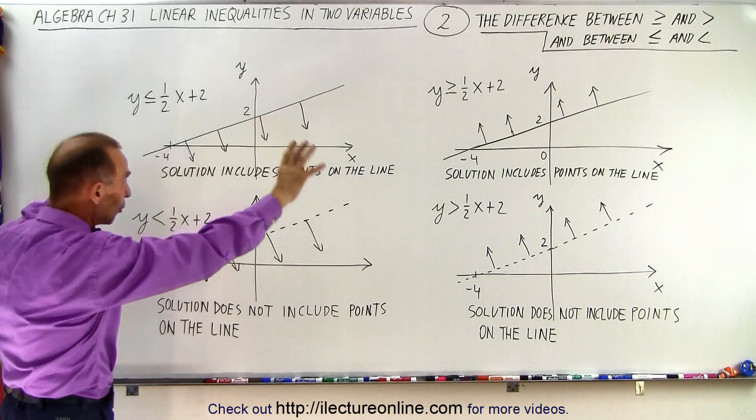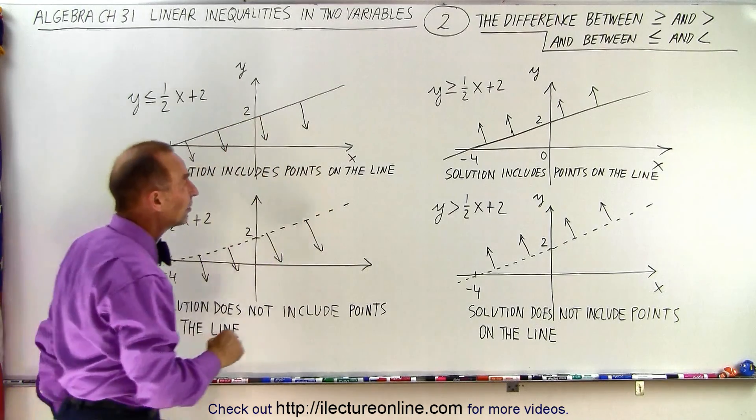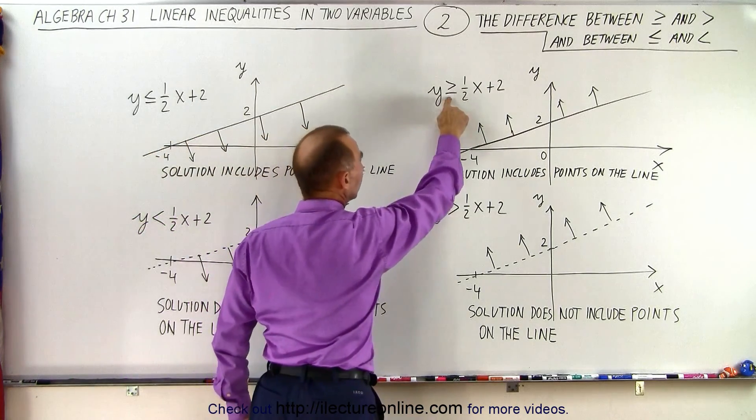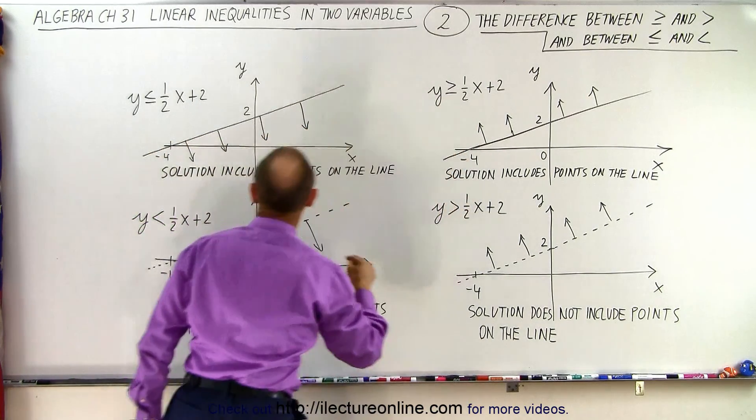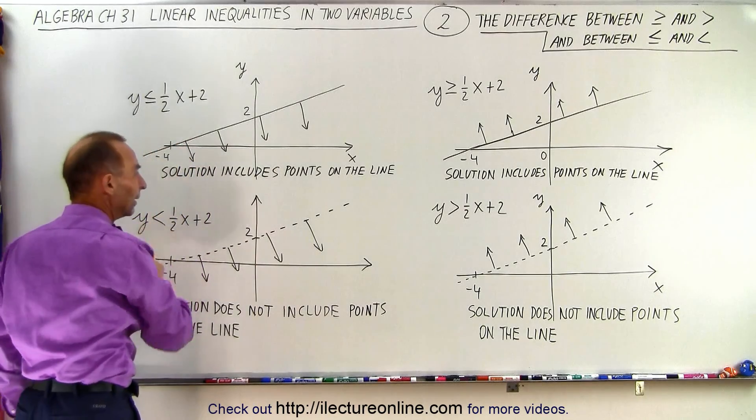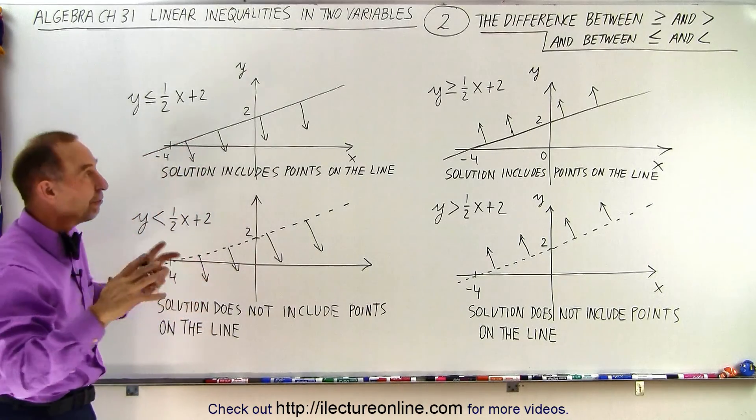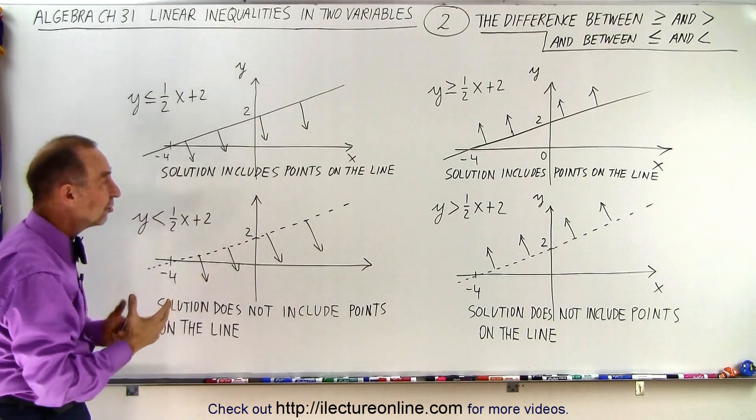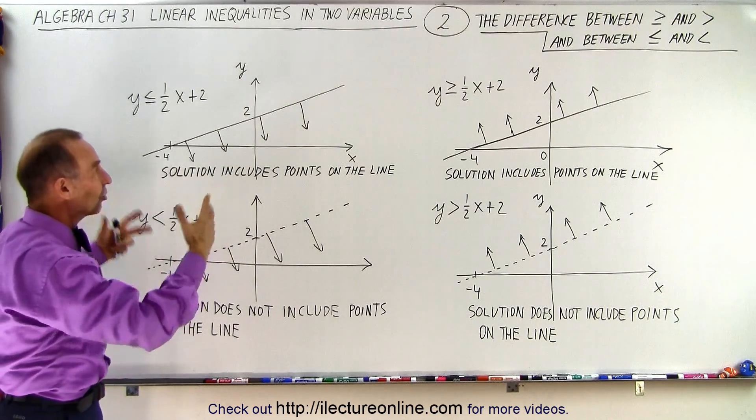The only difference between those four inequalities is that here we have greater than or equal to, here we have greater than, here we have less than or equal to, and here we have less than. Those are the only four combinations we can have with such an inequality.